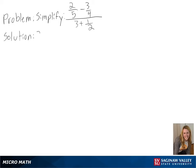Our problem is to simplify 2 fifths minus 3 fourths over 3 plus 1 half.